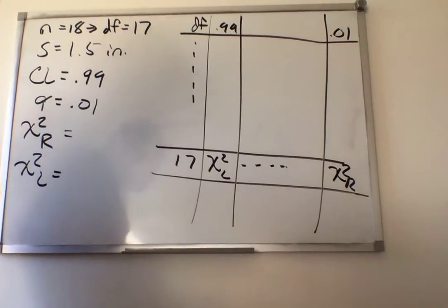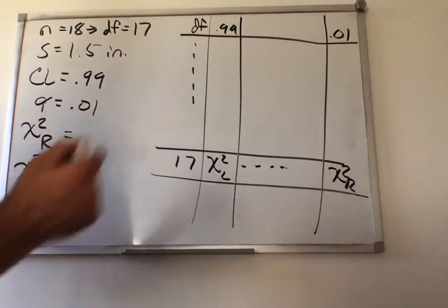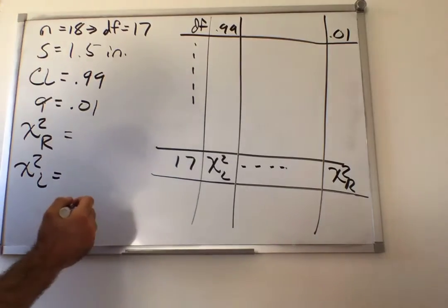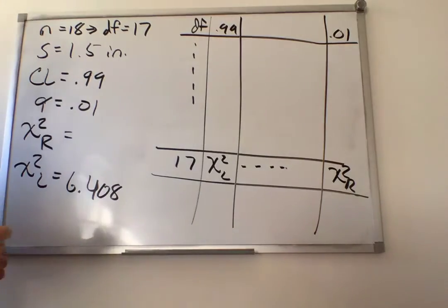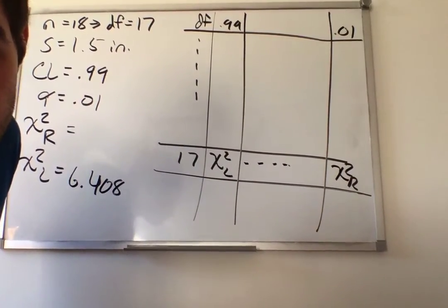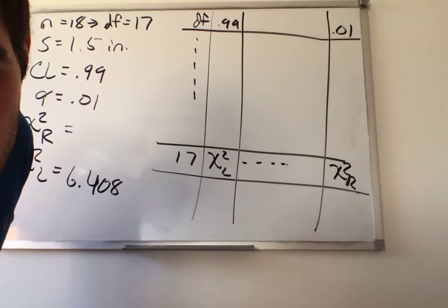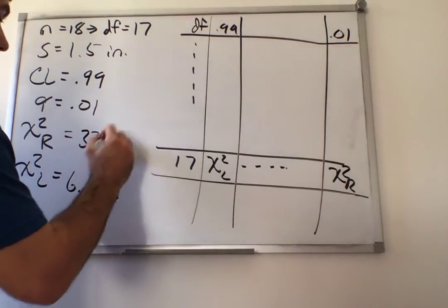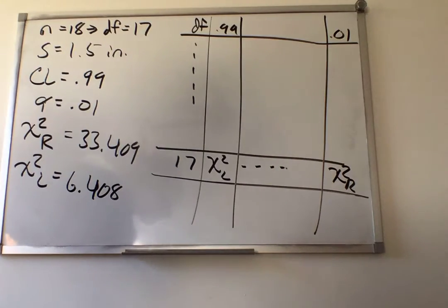So again, if you go to the table, go down to 17, and look at the left value, I got 6.408. And if you go all the way to the other side, 33.409.